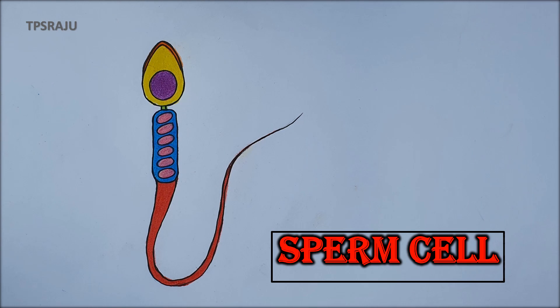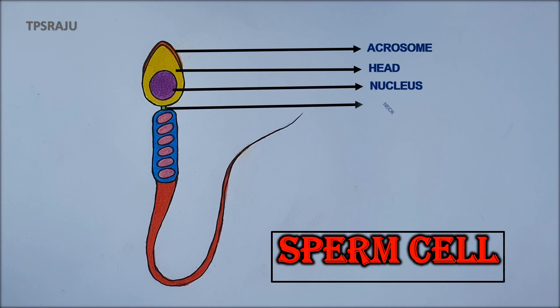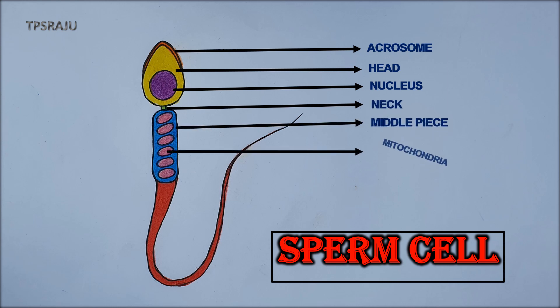Shall we label the parts. Acrosome. Head. Nucleus. Neck. Middle piece. Mitochondria. Tail.